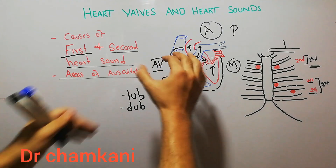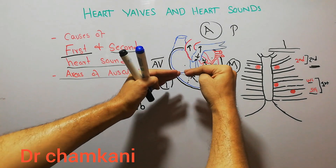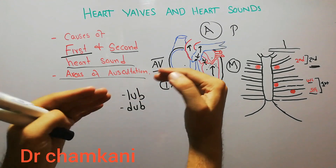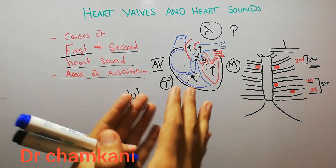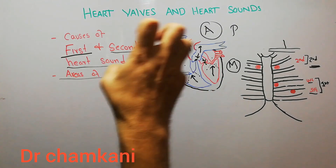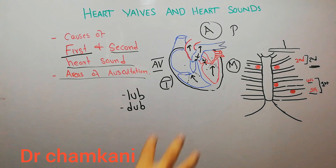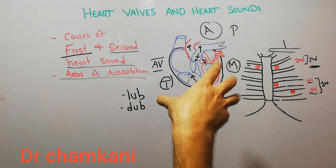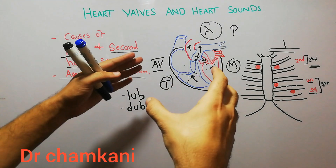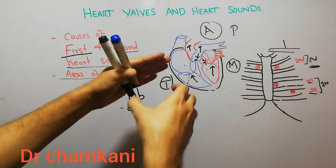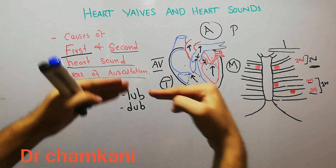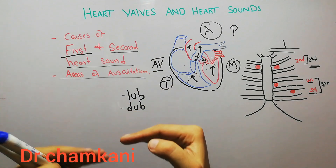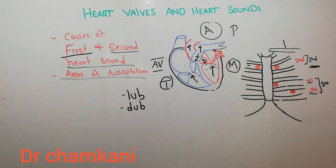So the areas for auscultation of the first heart sound are the fourth and fifth intercostal spaces, and for the second heart sound they are in the second intercostal space on the right and left sides of the sternum. When these valves close, vibration is generated which is transferred to the adjacent areas, producing the sounds we hear. The ventricles pump with vigor and force, causing the valves to close forcefully, generating this vibration.